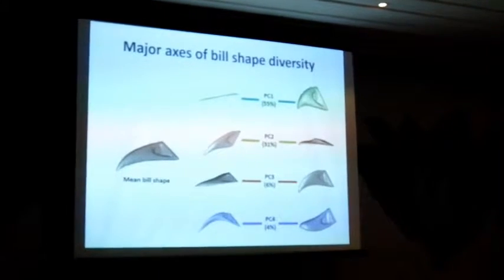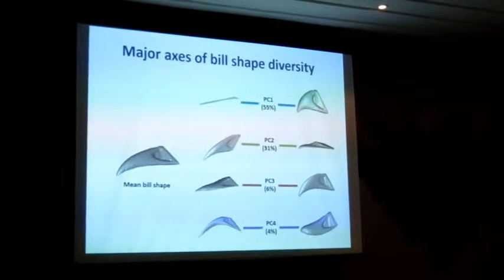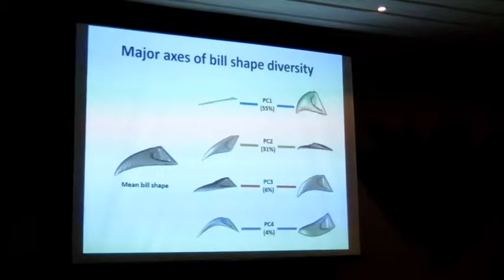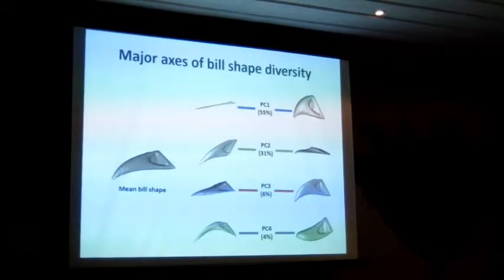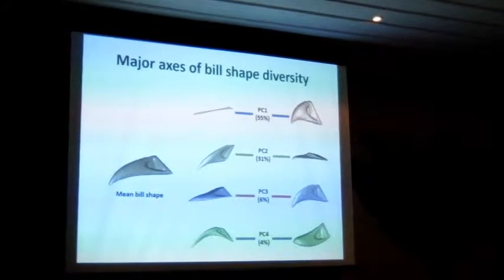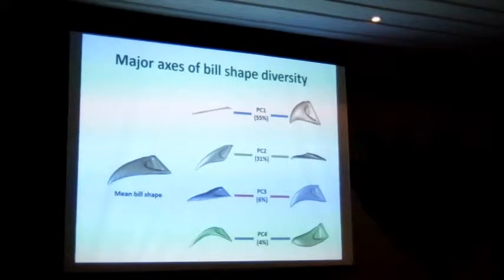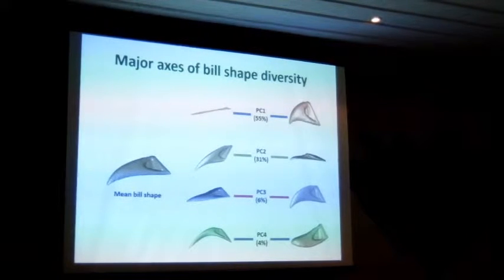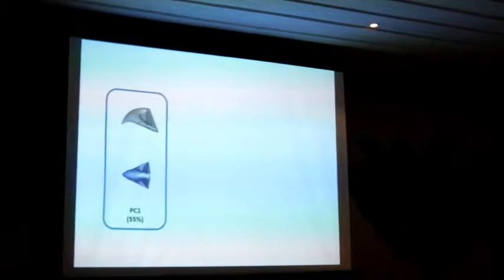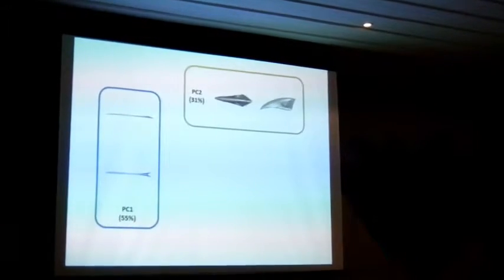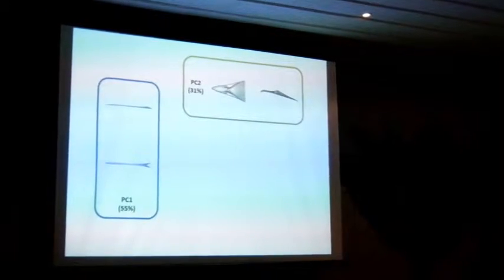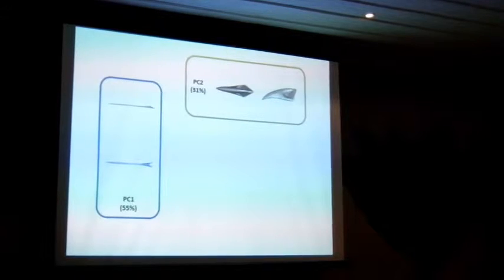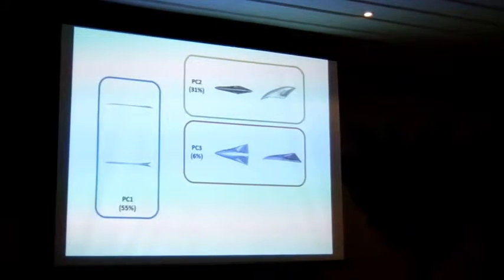By doing that for a sample of over 480 species picked to capture the extremes of bill morphology, and so that we have every avian family represented, we find that the major axis of evolutionary change in bill morphology involves changes in the relative length, width, and depth of the bird bill. At one end of the axis we have bills that are long and thin, and at the other end we have bills that are short and deep. On other axes we find more extremes of bill morphology involving primarily non-linear changes in shape.